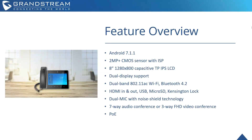To give a quick feature overview: it runs on Android 7.1.1, has a 2MP CMOS sensor with ISP, and an 8-inch capacitive LCD touchscreen. It has dual display support, which we'll go into later in the presentation. Dual band Wi-Fi for deployments utilizing Wi-Fi voice and video capabilities — for example, through our GWN access points. It also supports Bluetooth 4.2 pairing, HDMI in and out, USB, micro SD, and Kensington lock features.